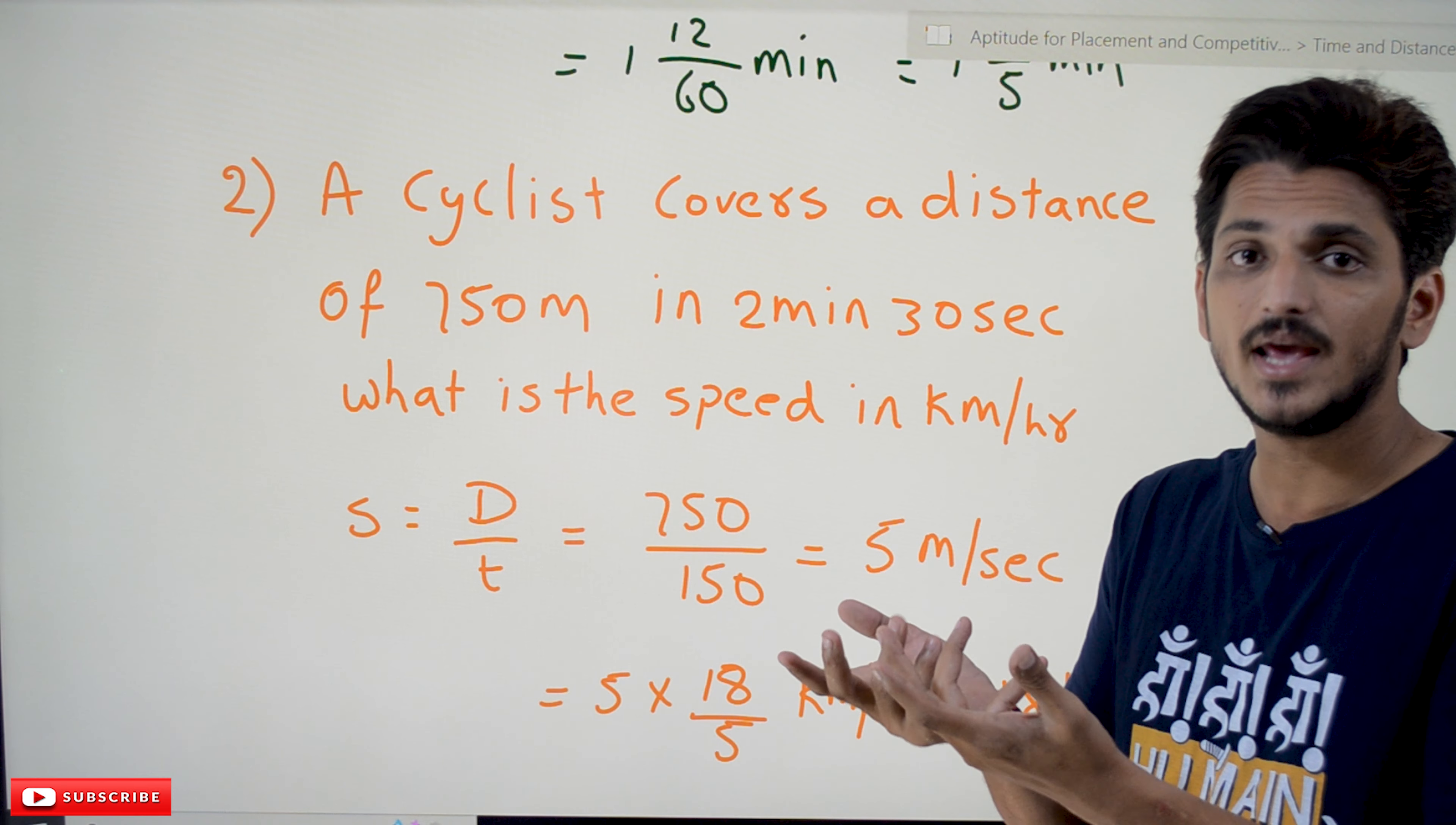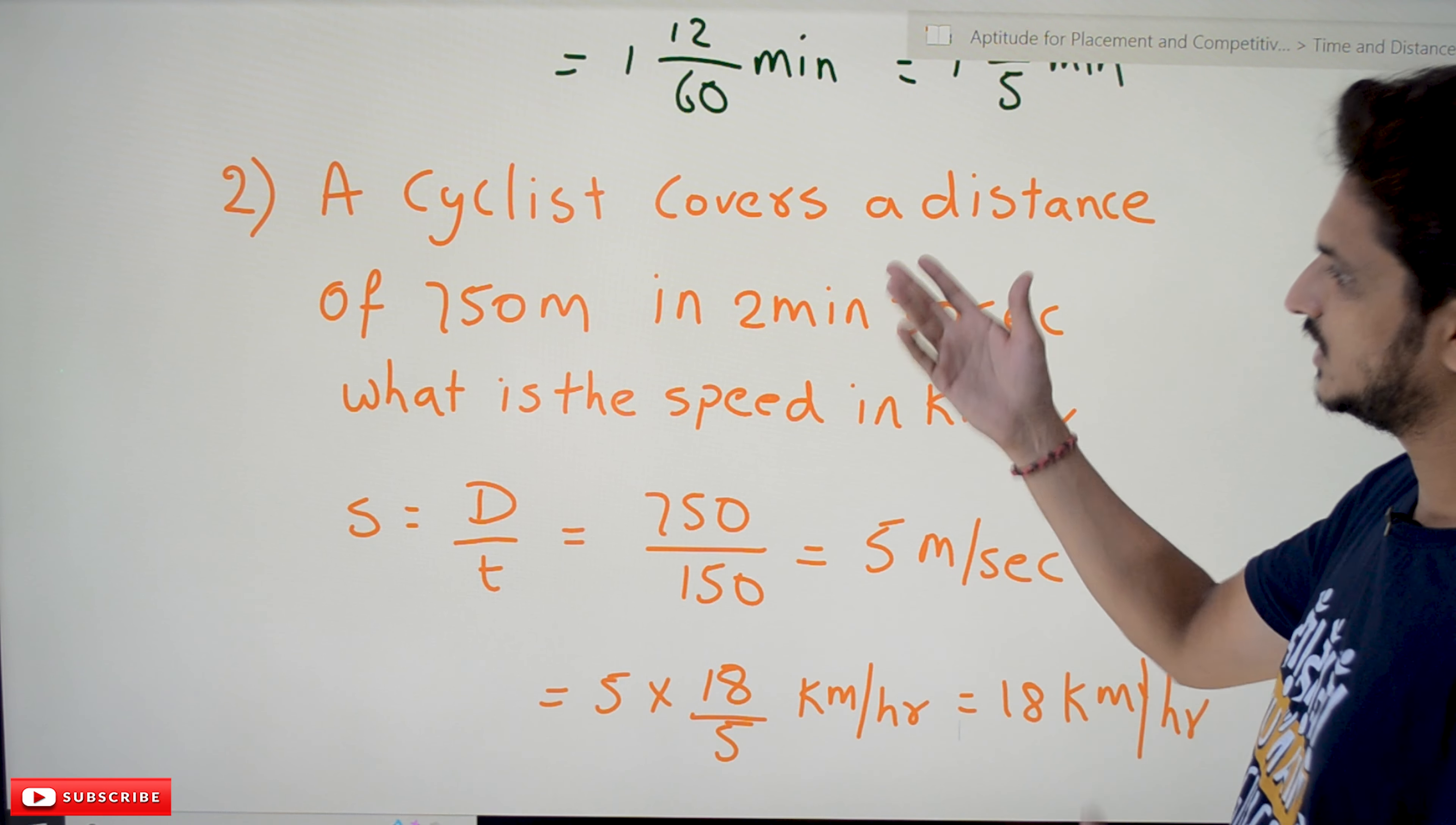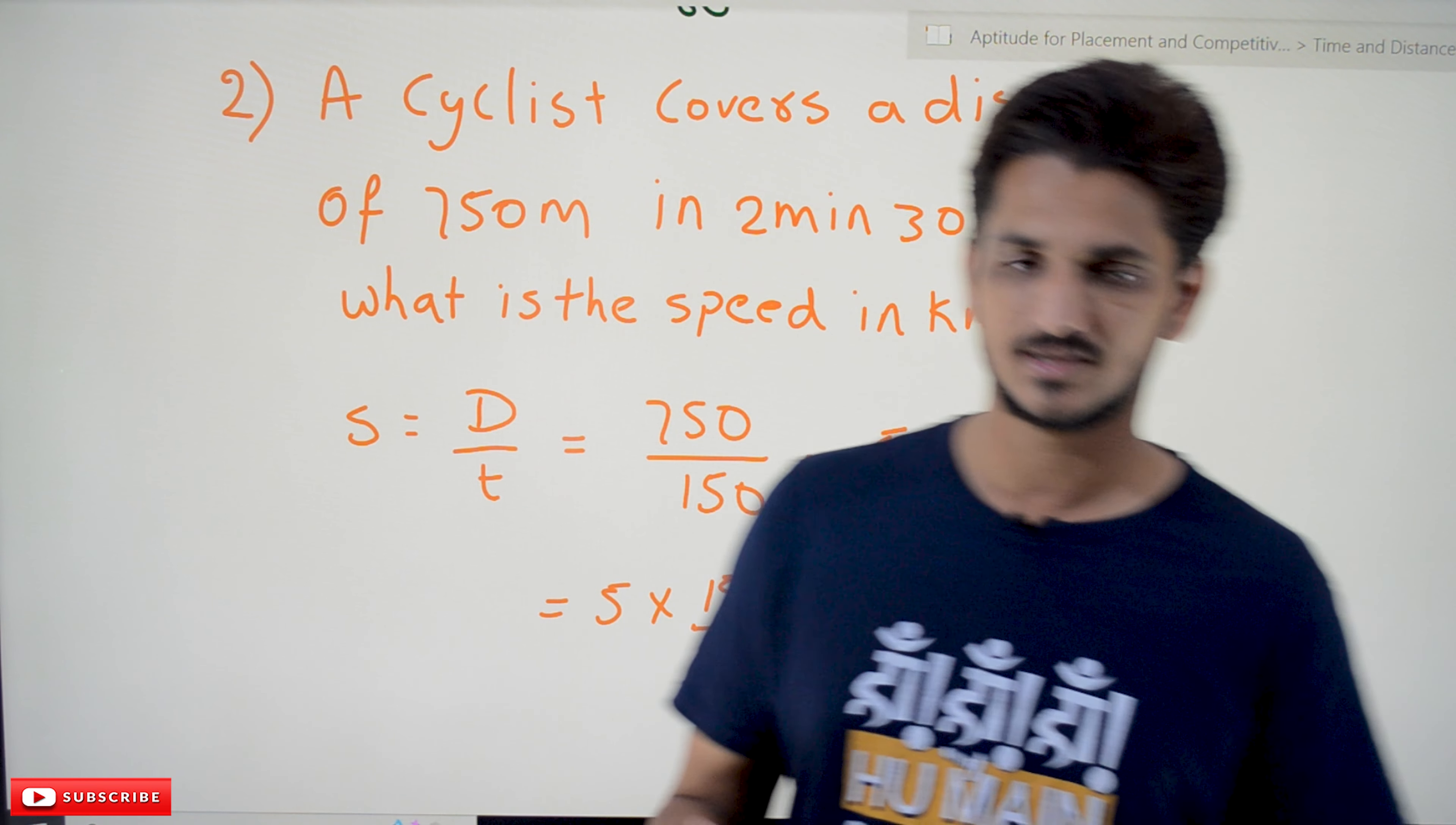If you want to convert from meters per second to kilometers per hour, multiply by 18 by 5. Speed equals distance by time, that is 750 meters divided by 150 seconds, which equals 5 meters per second. Converting: 5 multiplied by 18 by 5 kilometers per hour equals 18 kilometers per hour.